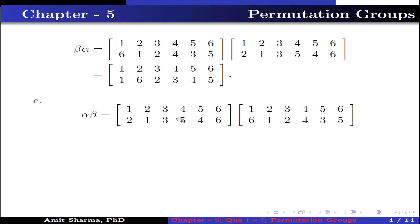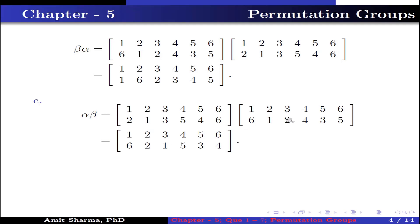Part C. The product alpha beta is computed similarly. Here: 1 maps through beta to 6, then 6 maps through alpha to 6, so 1 has image 6. 2 maps to 1 then to 2, so 2 has image 2. 3 maps to 2 then to 1, so 3 has image 1. 4 maps to 4 then to 5, so 4 has image 5. 5 maps to 3 then to 3, so 5 has image 3. 6 maps to 5 then to 4, so 6 has image 4.